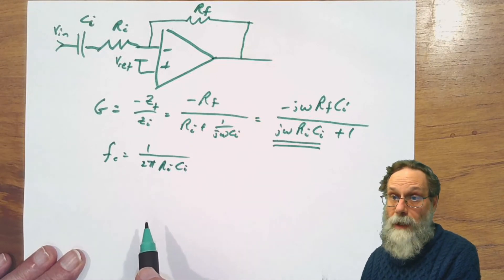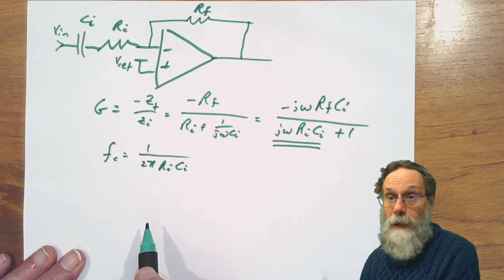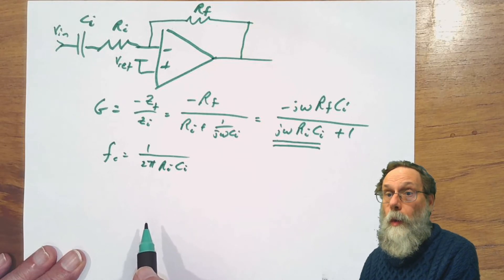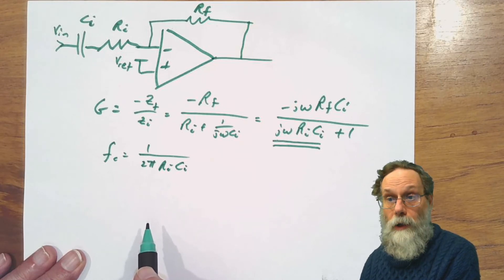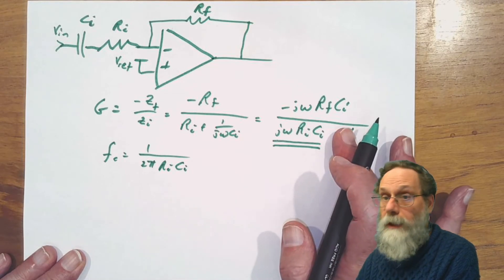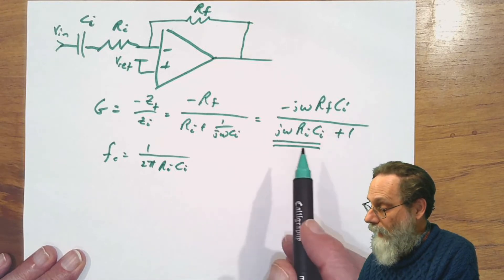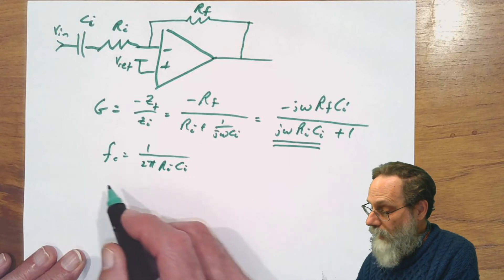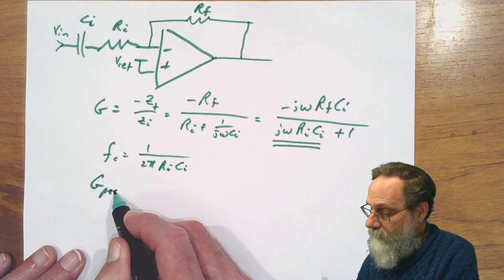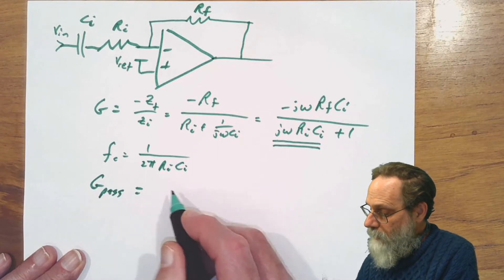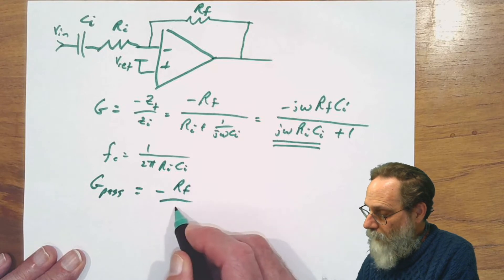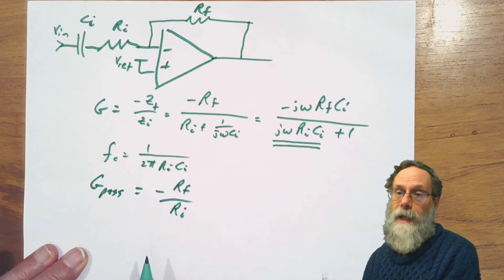The gain in the pass band, well, the pass band here is where omega is very large. And so this plus one essentially disappears, and the J omega cancels, and so the gain in the pass band is going to be just minus RF over RI. Everything else cancels.